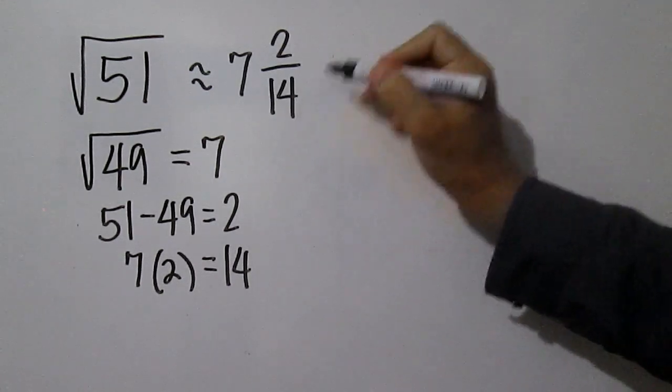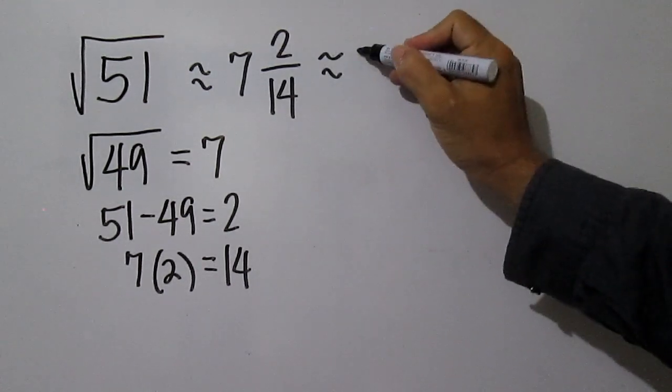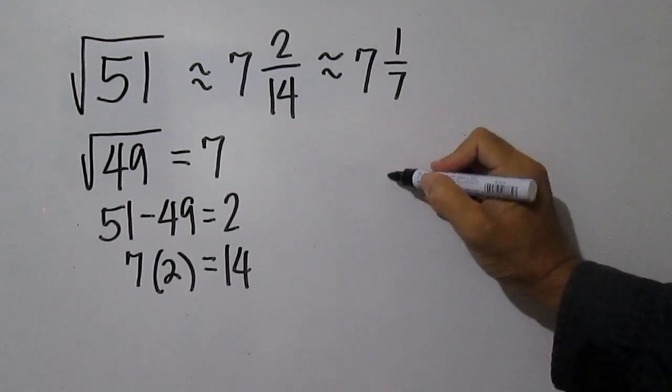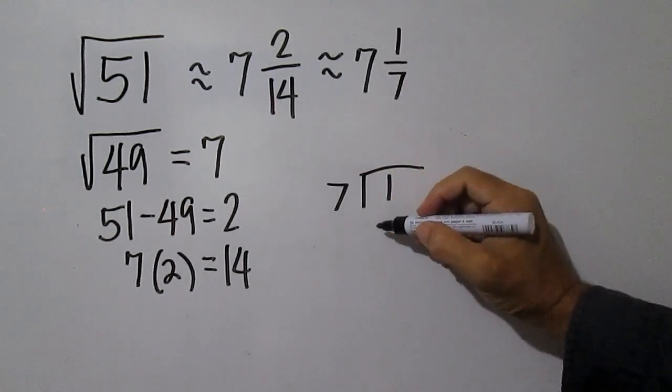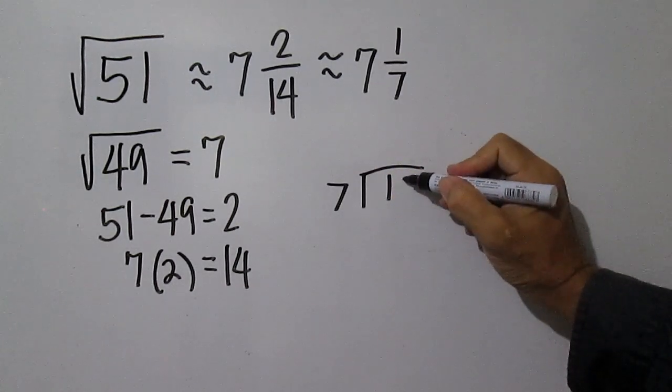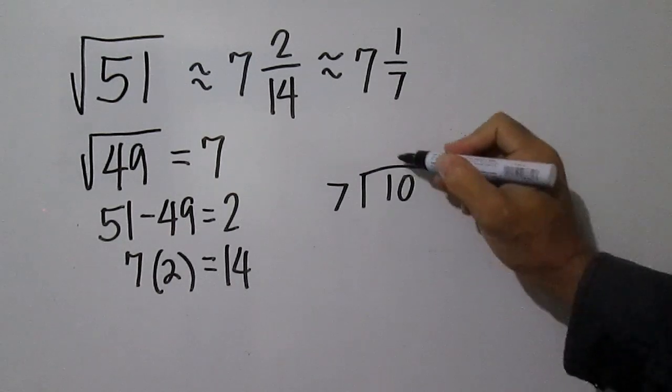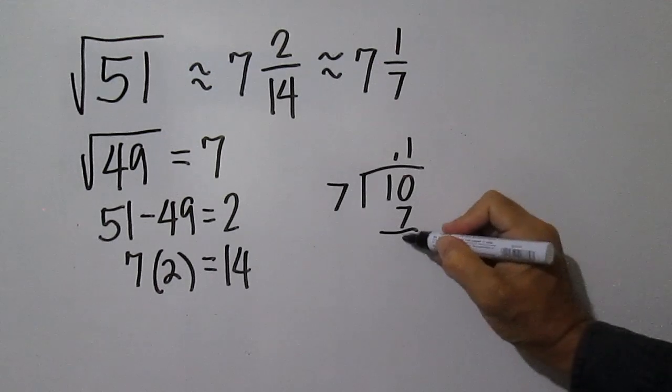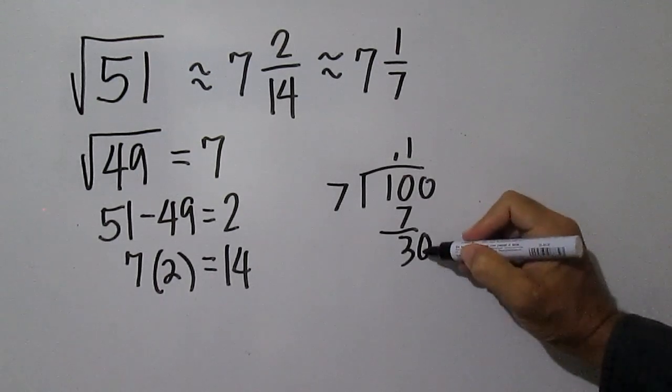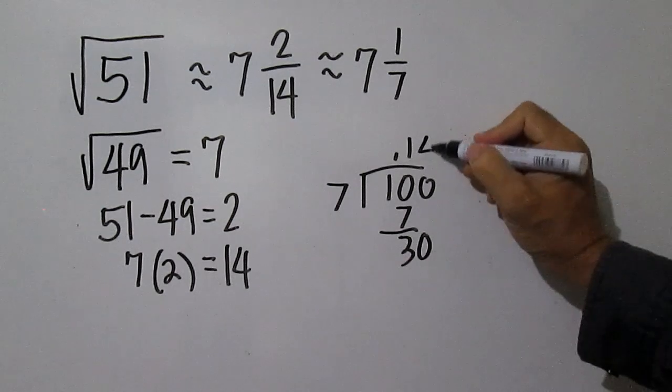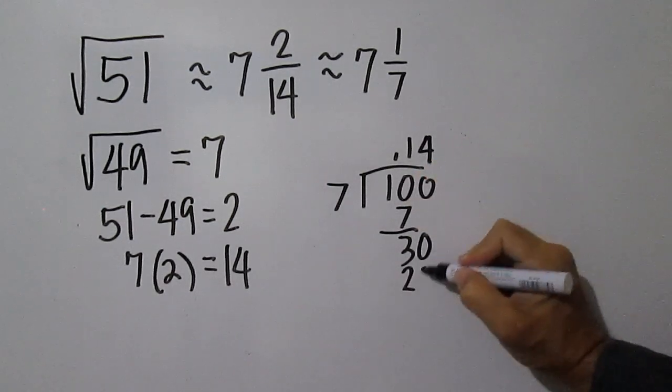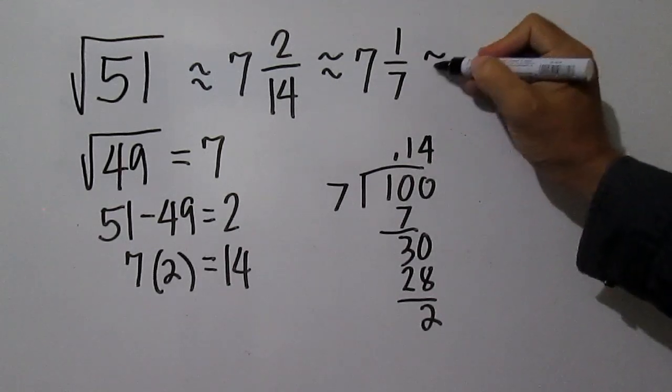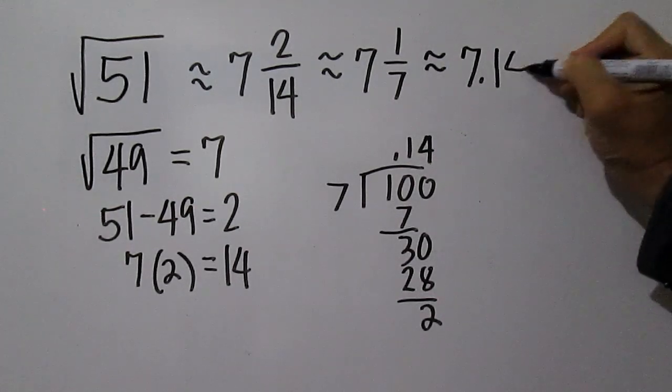Square root of 51 is approximately equal to 7 and 2 over 14, which can be simplified into 7 and 1 over 7. Divide 1 by 7. Square root of 51 is approximately equal to 7.14.